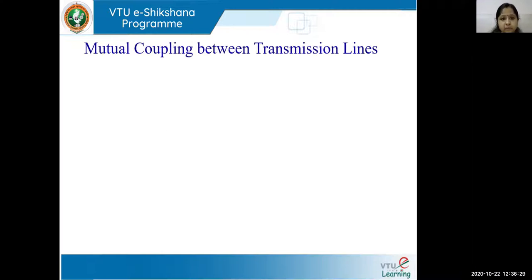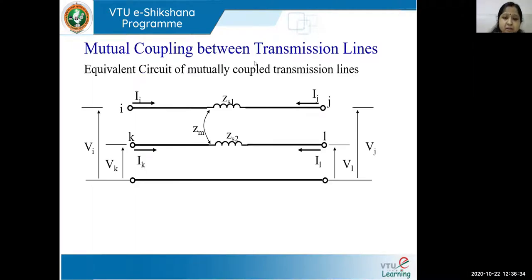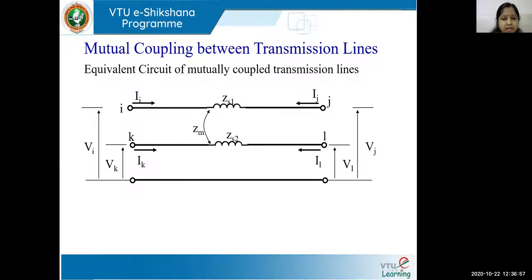Before we start, we need to understand what mutual coupling between transmission lines means. I'm explaining this concept with the help of two transmission lines. Once transmission lines get energized, they generate their own self magnetic field. That magnetic field gets affected by nearby or parallel lines' magnetic fields. Hence we say the two lines are mutually coupled, and this results in induced zero sequence voltage and current in both lines.